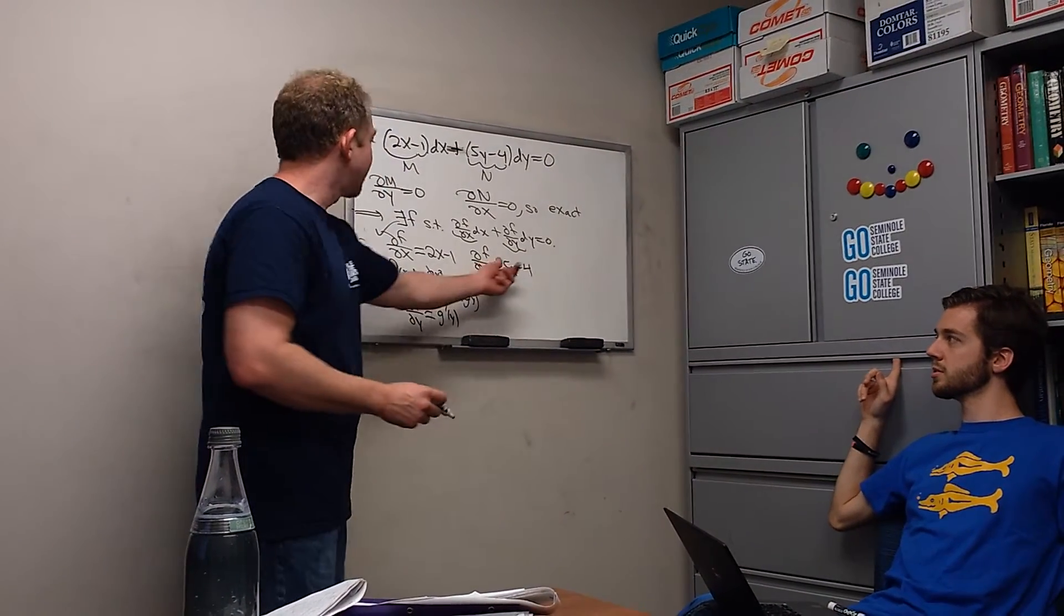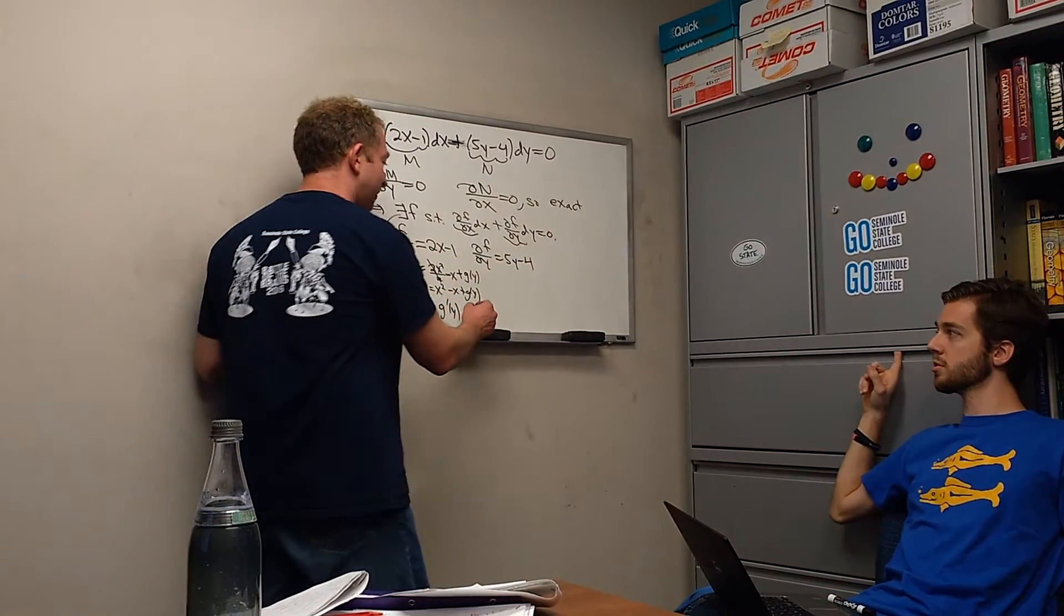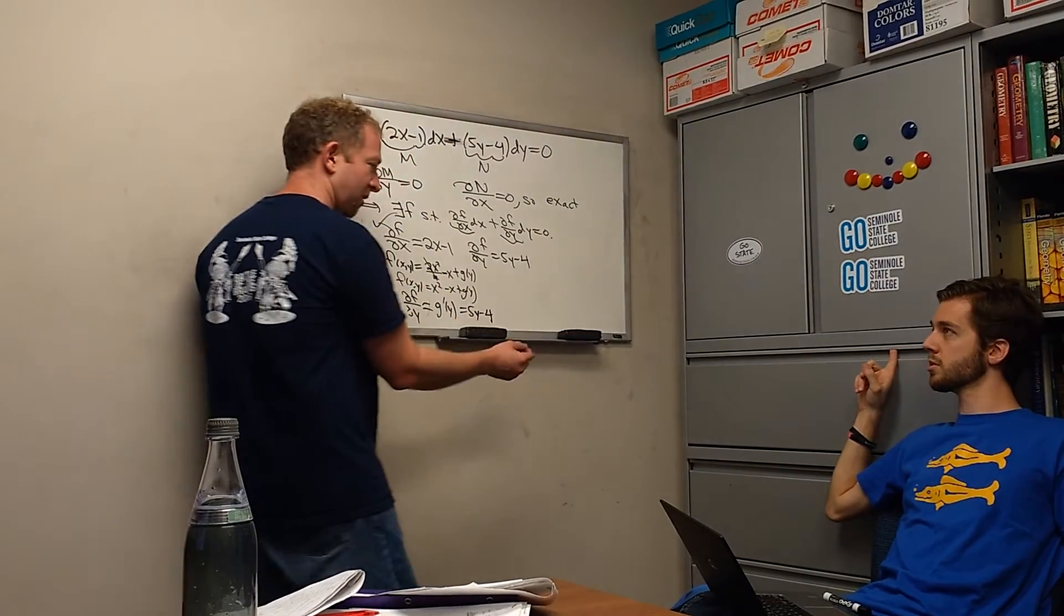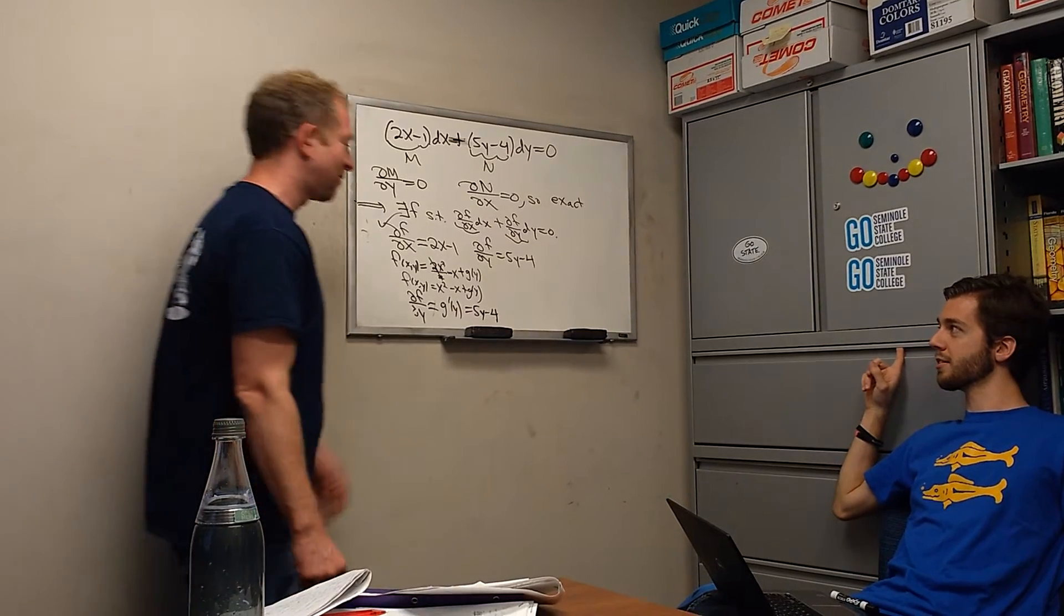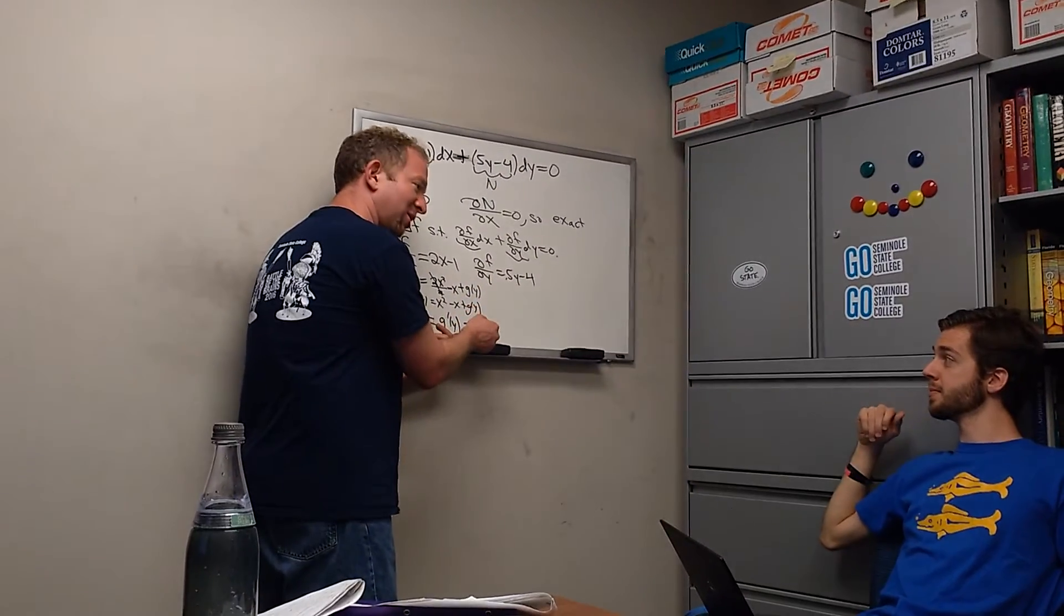Okay. And then, but del f del y is over here. Yes. Right? So this must be equal to 5y minus 4. Right? Because we work this out, and then this must be equal to this. So we set them equal to each other.